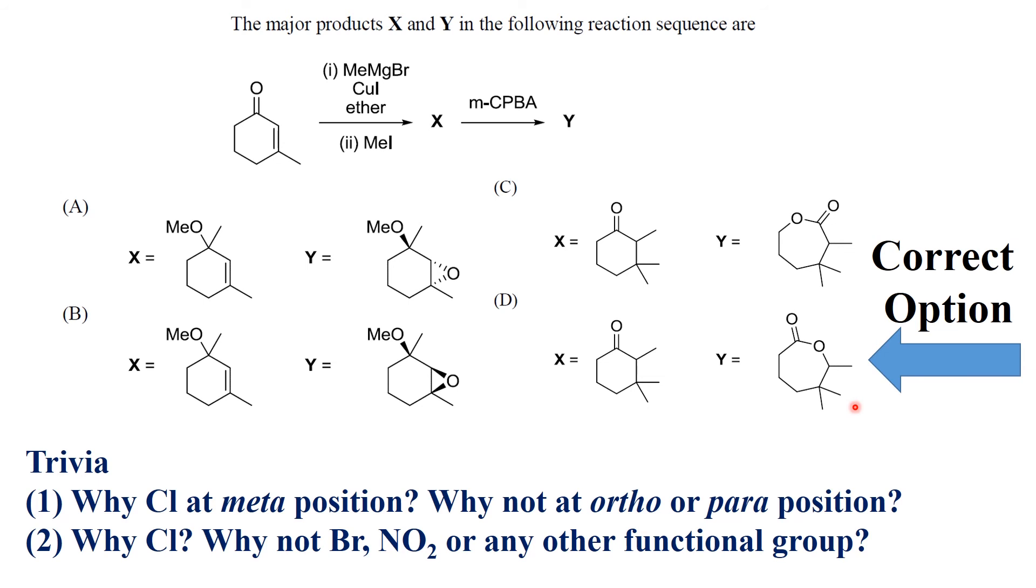Why is it metachloroperbenzoic acid? First question is, why is it metachloroperbenzoic acid, why not orthochloroperbenzoic acid or parachloroperbenzoic acid? Secondly, why is it chloro? Why not metabromo or metanitroperbenzoic acid?